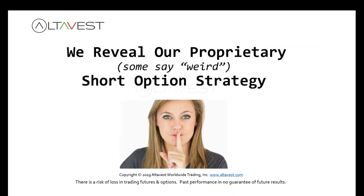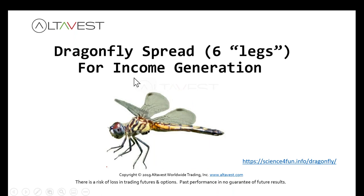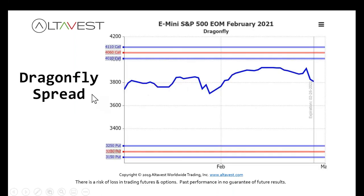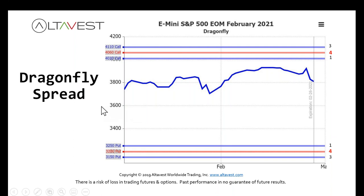Here's a really unique proprietary strategy we created called a dragonfly. It has six legs — it's an income-generating spread, just like a condor or selling a put or call spread, but it's a variation on the condor. You sell four of the 40-60 calls, buy three further out-of-the-money calls, and then one closer-to-the-money call, with the same structure on the downside with puts: selling four puts, buying three further out and one closer to the money. The one you buy is 50 points closer to the money compared to the four that you sold, which changes the entire dynamics of this trade compared to a condor.